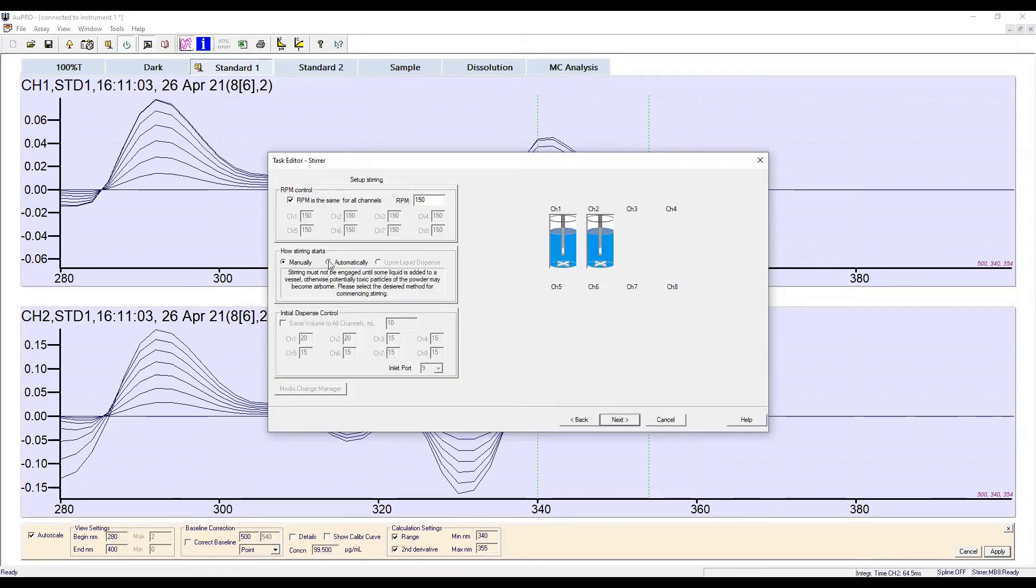The next screen allows the analyst to set up the stirring parameters for the assay. The stirring speed is input, along with the countdown delay, allowing the analyst time to add sample to each channel in turn before stirring and data collection is commenced.